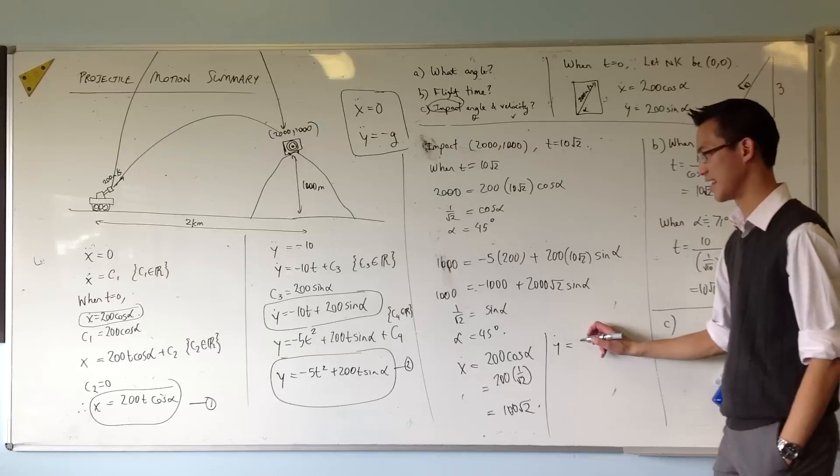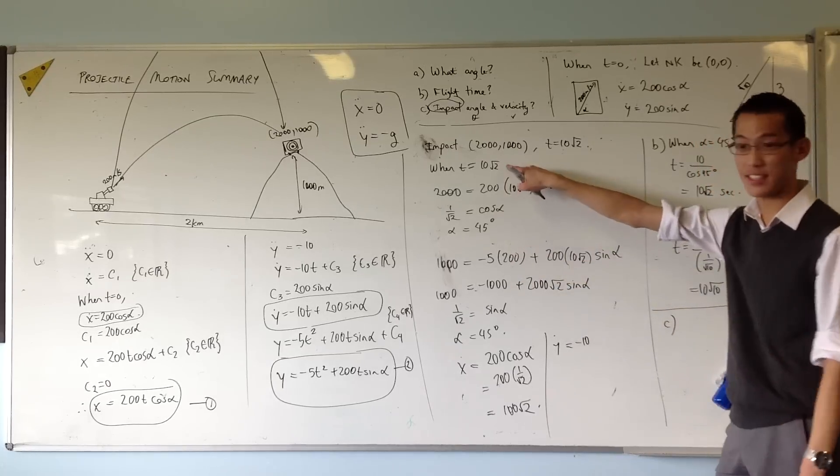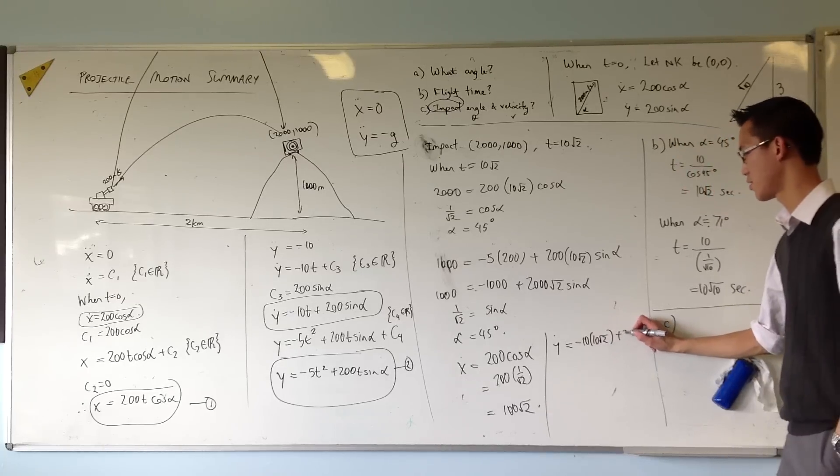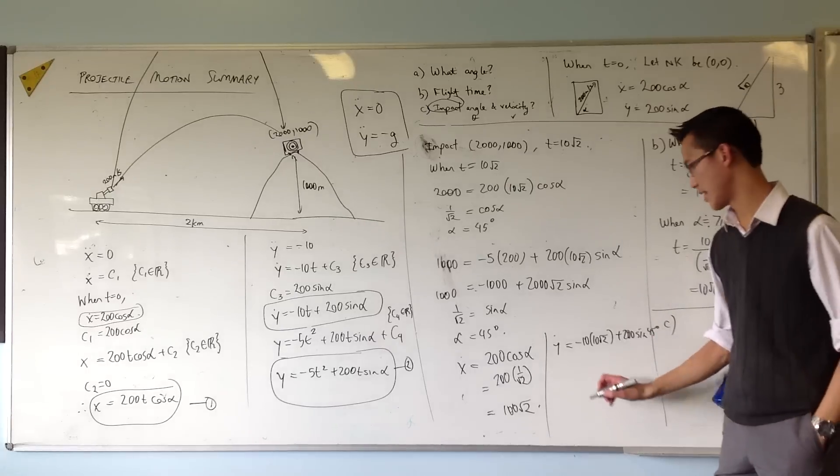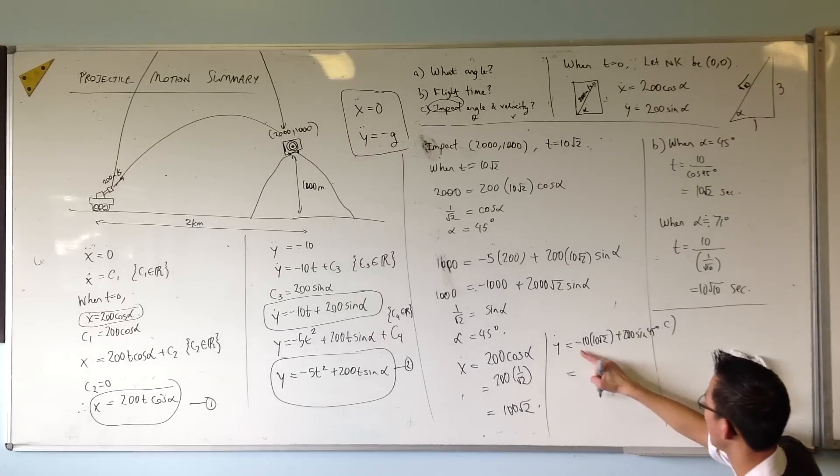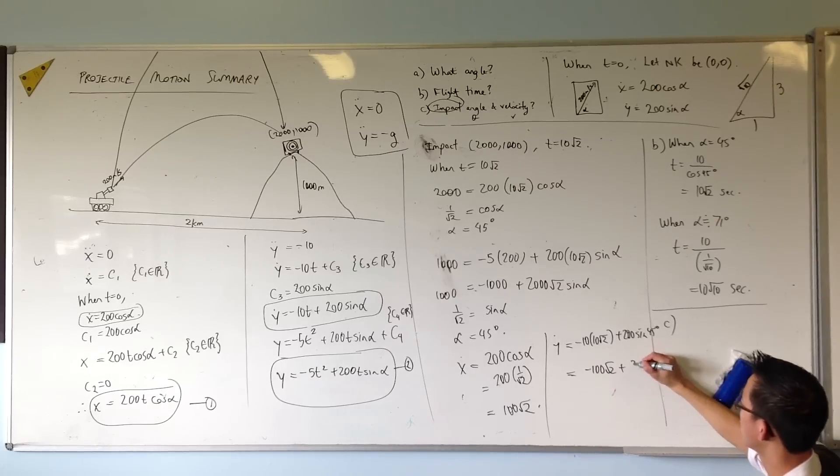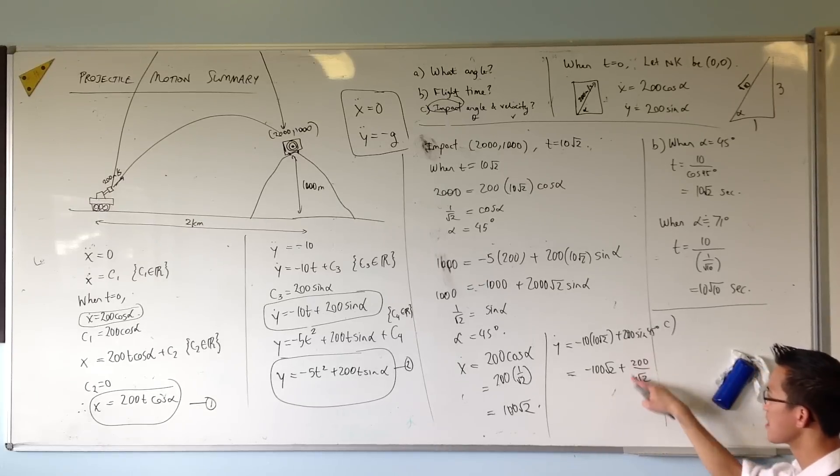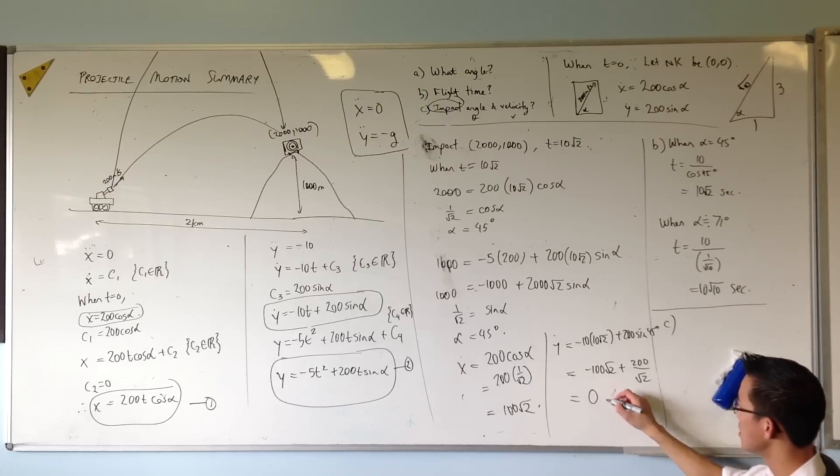Let's finish this off. I've got minus 10 times this t plus 200 sine 45. So what do we get here? Minus 100 root 2 plus 200 on root 2. You agree with that? That's 100 root 2 isn't it, once you rationalize. So that's 0.